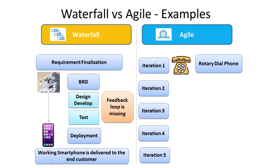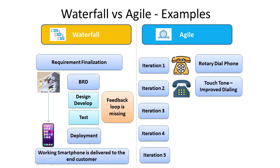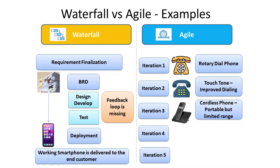In iteration 1, the output is a rotary dialed phone — people could connect, but it is wired with a clumsy dialing experience. In iteration 2, the touchtone phone was developed, improving the dialing experience, but portability was a constraint. In iteration 3, a cordless phone introduced portability but with limited range. In iteration 4, the mobile phone made the phone completely portable with no range limit. In iteration 5, the smartphone was developed — it can access the internet, has a touchscreen and inbuilt processors, making it a mini-computer.